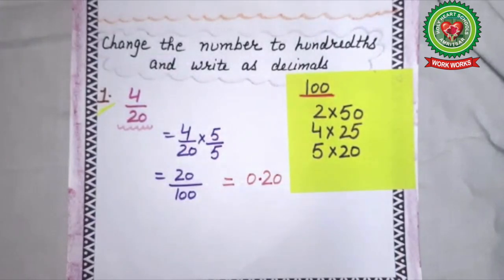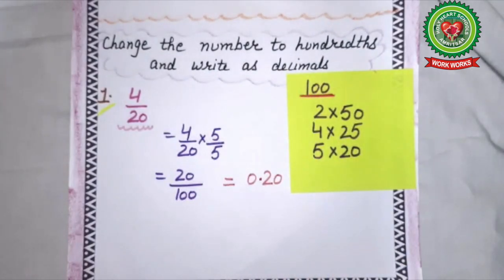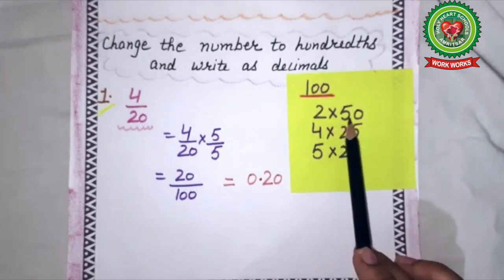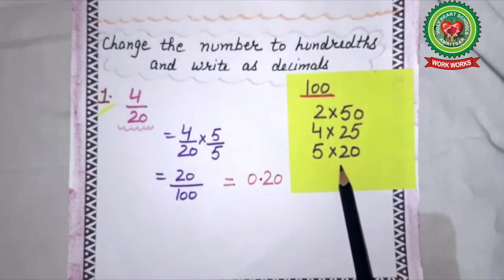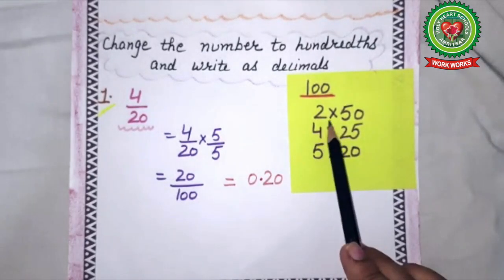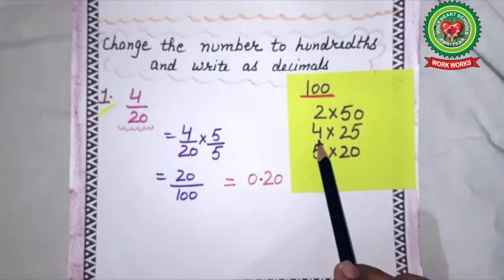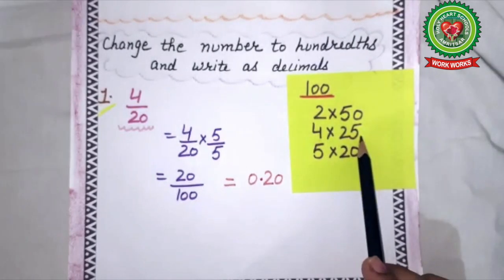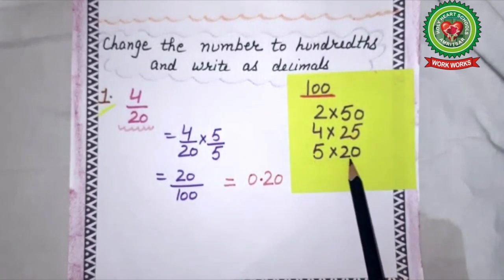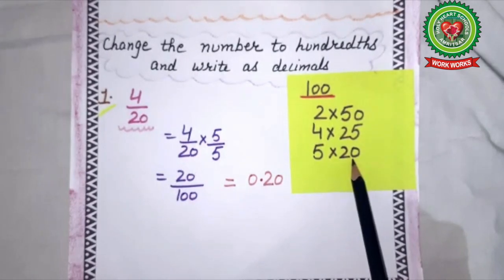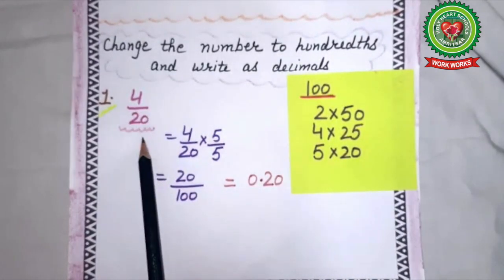Next, students, we will learn to change the number to hundredths and write as a decimal. Hundredths means the denominator should be 100. Factor pairs: 2 × 50, 4 × 25, 5 × 20. So if denominator is 2, multiply by 50; if 50, multiply by 2. If denominator is 4, multiply by 25; if 25, multiply by 4. If denominator is 5, multiply by 20; if 20, multiply by 5.